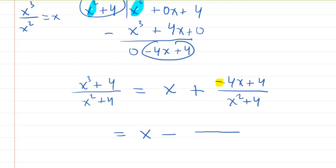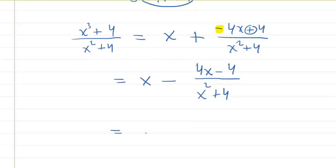So that would give us x minus. And then when you factor out that negative, you're going to switch the sign to a plus 4x. And then this sign also switches to a minus 4 like that. So that's just a slightly nicer looking expression. We can actually break that down even further because we'll have x minus. And you're going to basically split the numerator. So you'll have 4x over the x squared plus 4 and then minus 4 also over the x squared plus 4.